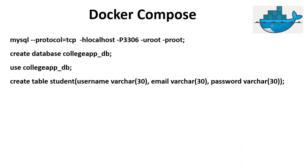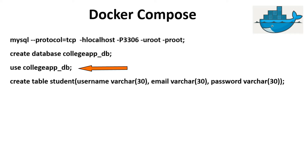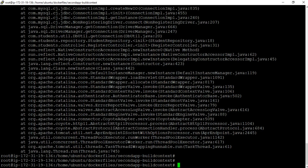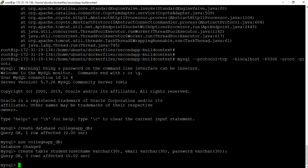We have four MySQL client queries. The first query will connect to the MySQL server. The second will create the collegeapp_db database. The third will switch to the collegeapp_db database. And the fourth will create the student table inside the collegeapp_db database. I have copied all these queries — let us go to the PuTTY command line tool and paste all four MySQL client queries. With this, the database setup for this application is done successfully.